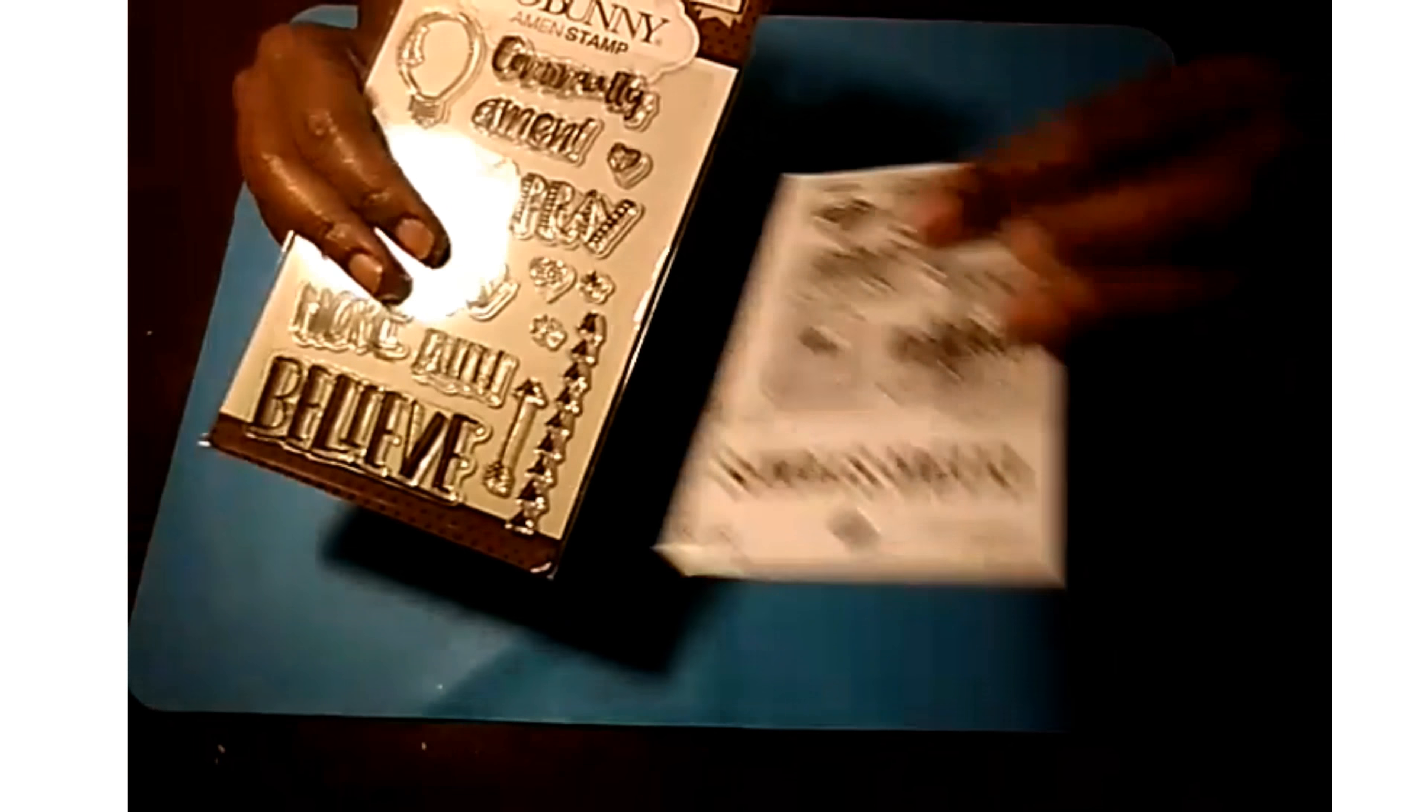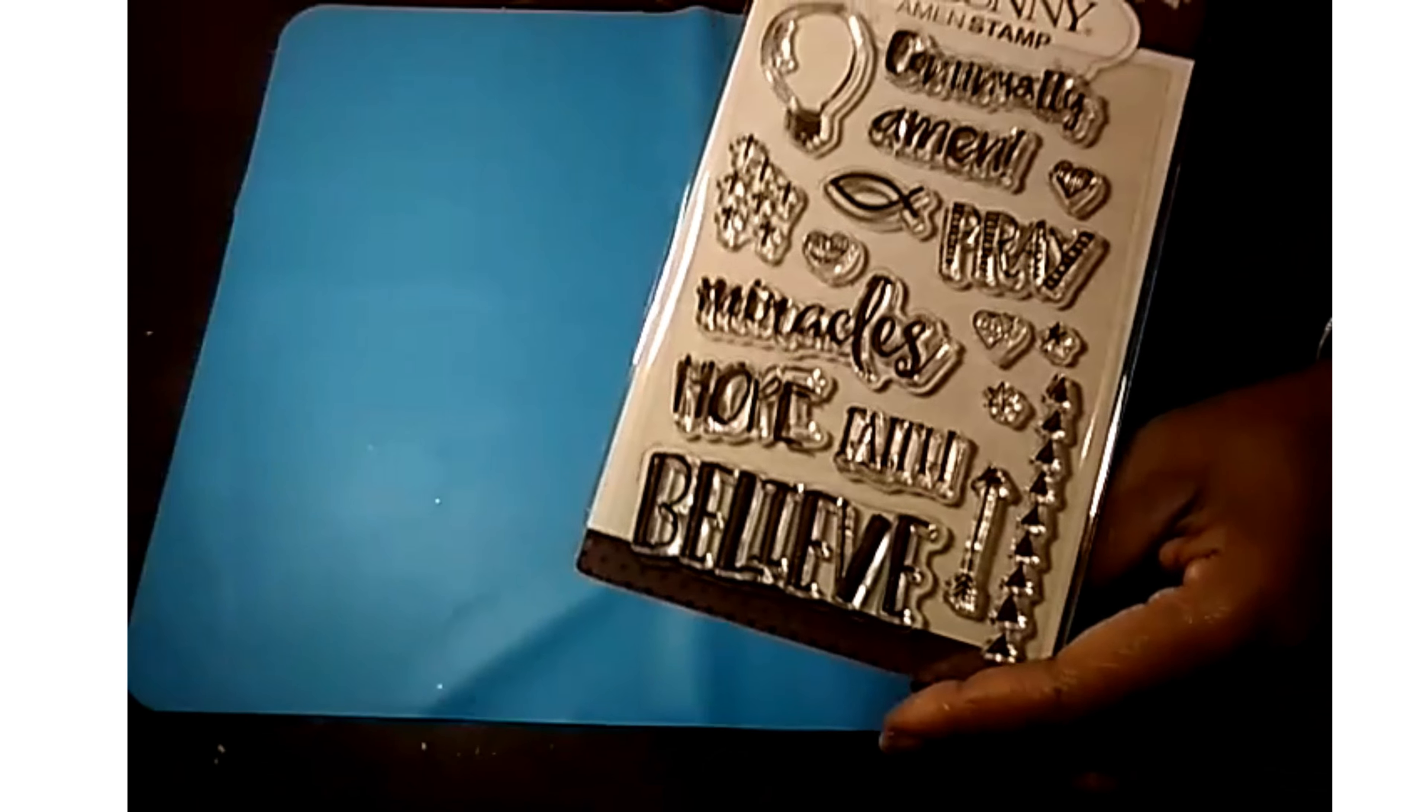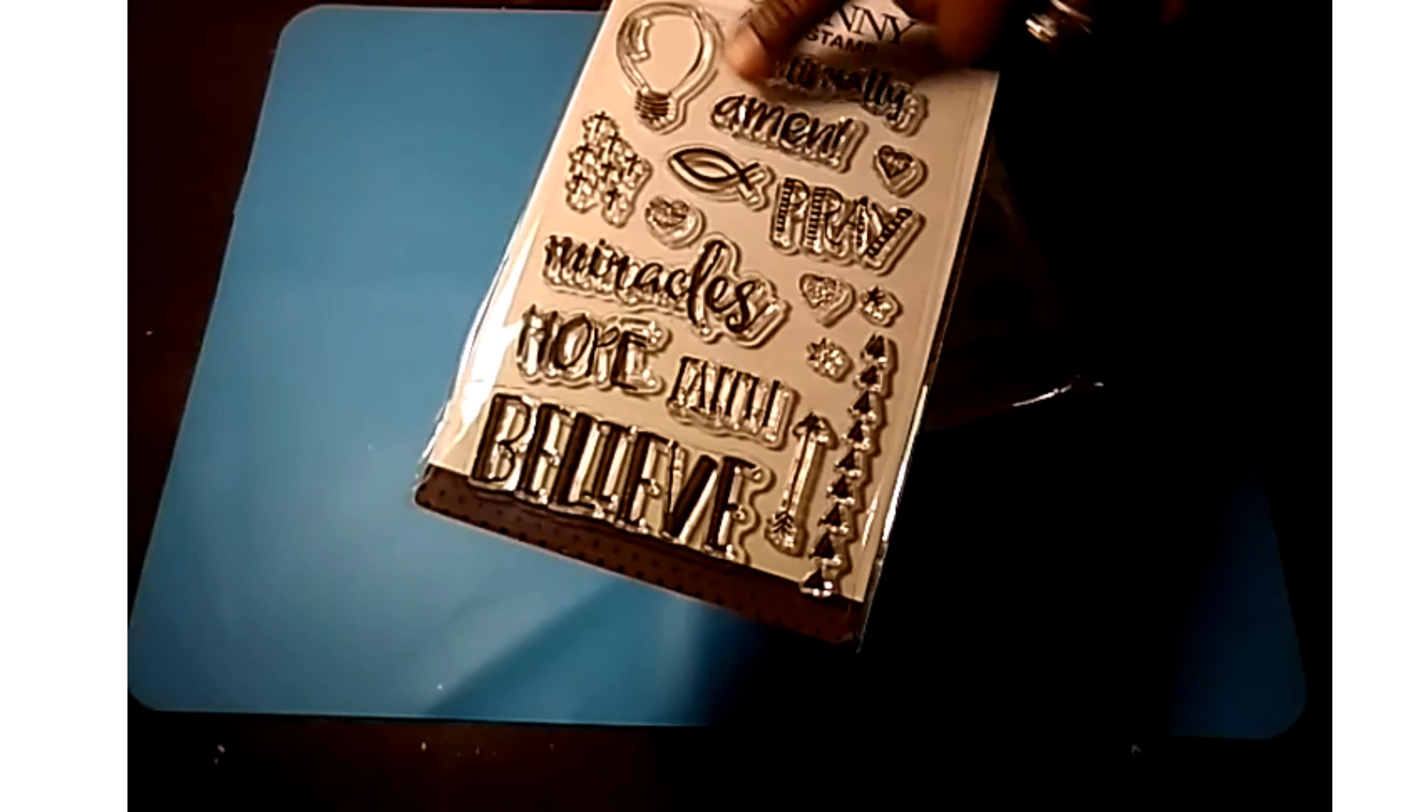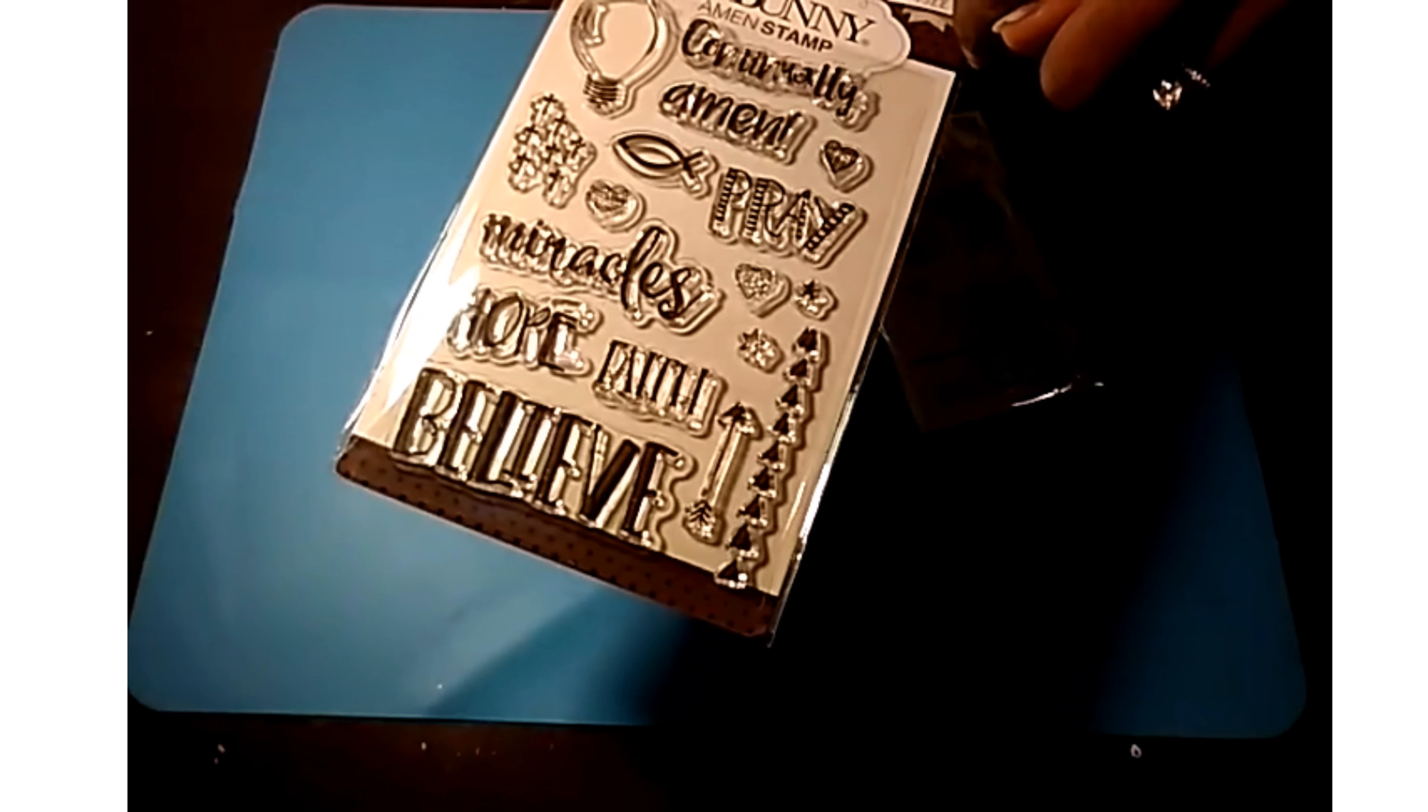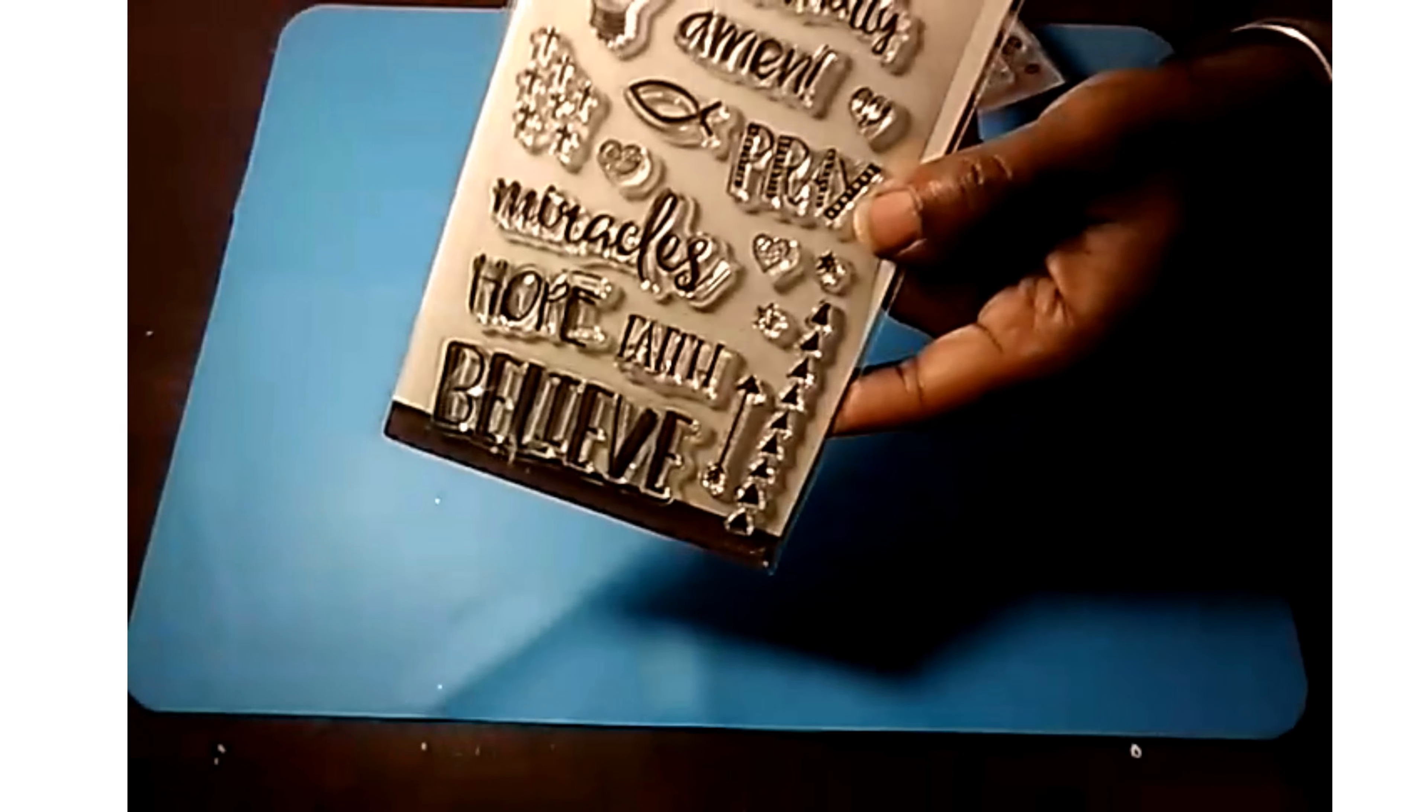And then I got a couple of stamp sets. This one is Bow Bunny. And because I do a lot of keepsake and memorial crafts and I sell a lot of those products, I thought that this was a good stamp set to have. Pray continually, amen, light bulb, batch of crosses, miracles, hope, faith, believe, arrows, hearts, and stars. And then of course, our symbol here. These are on sale for 40% off, originally $6.